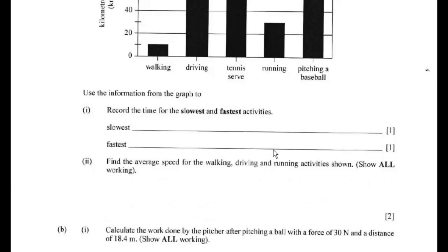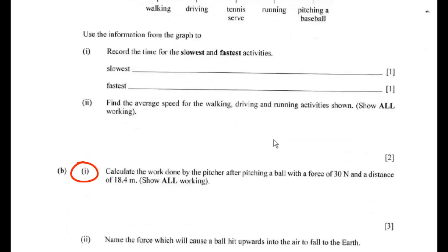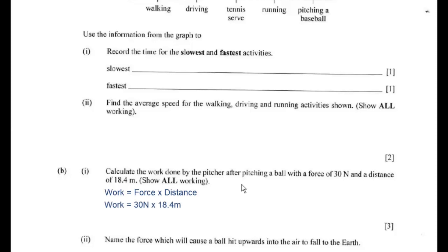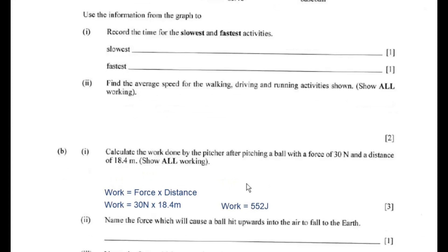The next question, 6B1, asks you to calculate the work done by the pitcher after pitching a ball with a force of 30 newtons and a distance of 18.4 metres. Again, show all your working. Work done equals force times distance. The force is 30 newtons and the distance is 18.4 metres, so work done equals 30 times 18.4, which gives 552 joules — symbol J. You must write down the correct units, so the answer is 552 joules.